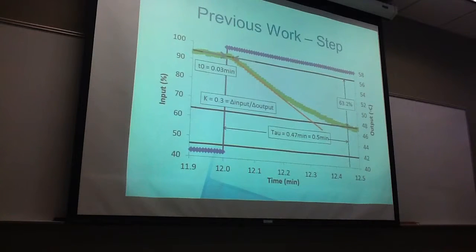For the step response system, we got a K value, which is our gain of 0.3, a tau of about 30 seconds, our dead time of about 1.8 seconds.